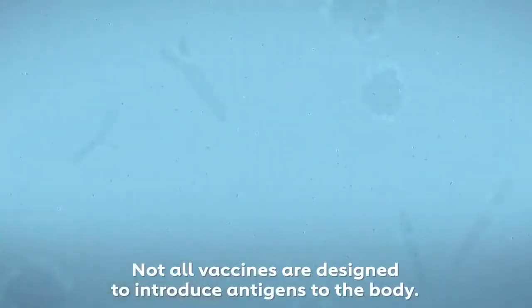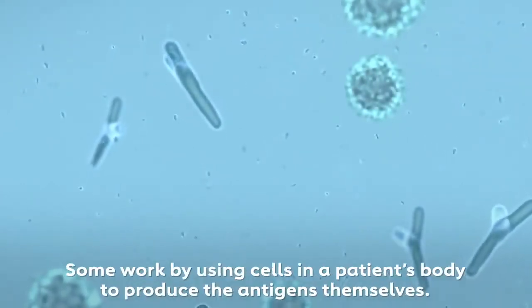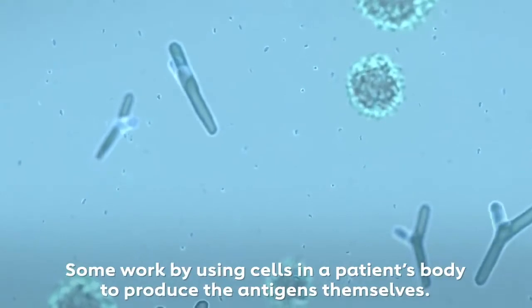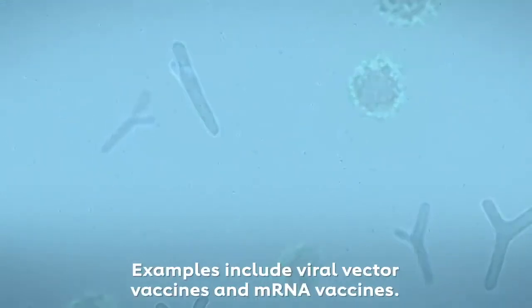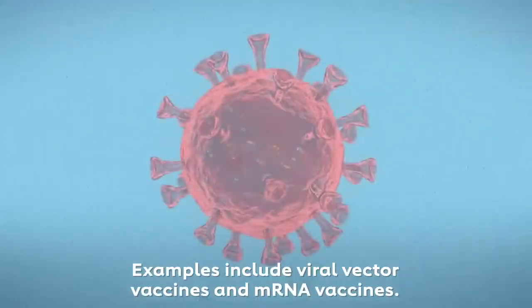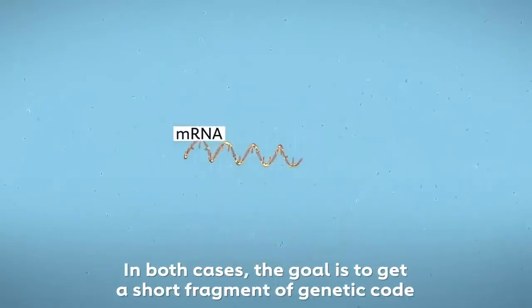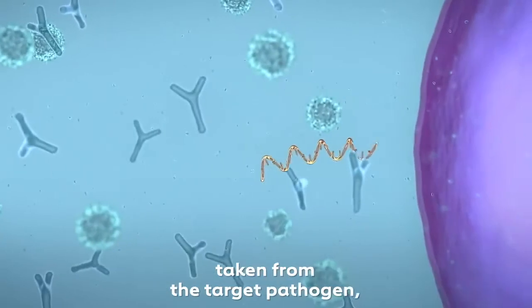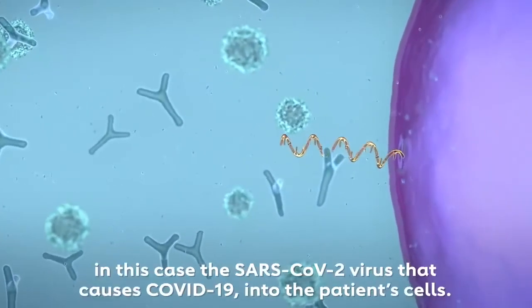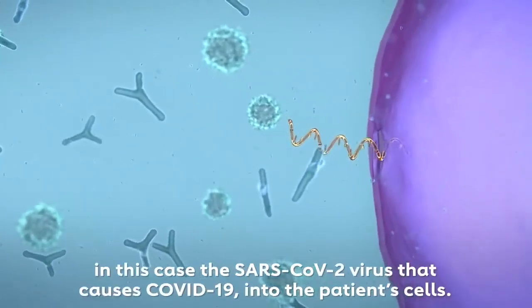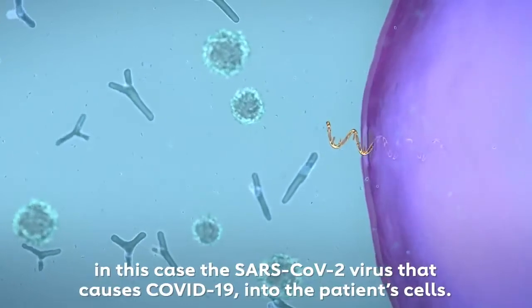Not all vaccines are designed to introduce antigens to the body. Some work by using cells in a patient's body to produce the antigens themselves. Examples include viral vector vaccines and mRNA vaccines. In both cases, the goal is to get a short fragment of genetic code taken from the target pathogen, in this case the SARS-CoV-2 virus that causes COVID-19, into the patient's cells.